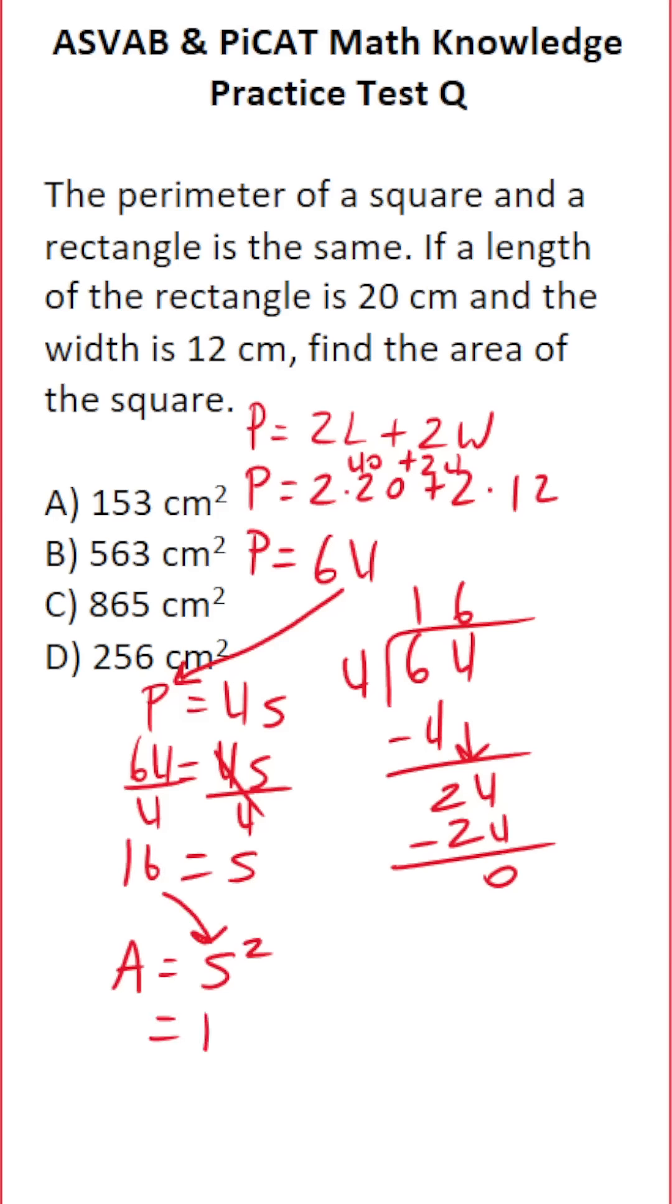The area is 16 squared, which is 16 times 16. Working through the multiplication: 6 times 6 is 36, so bring down 6 and carry 3. 1 times 6 is 6 plus 3 is 9. Add a 0 placeholder before the second row of multiplication.